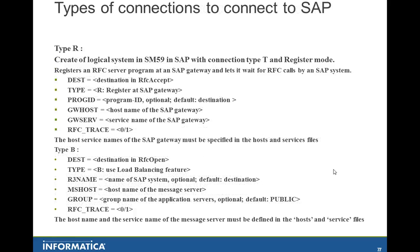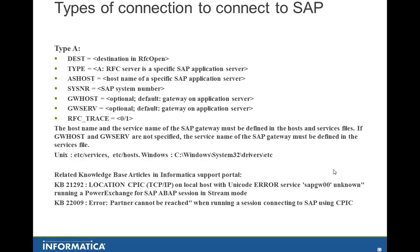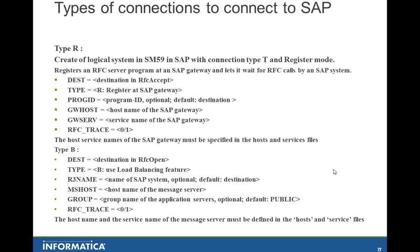Type B requires the host name of the message server, then a group name for all the application servers, and then the name of the SAP system where the message server is configured. For Type A, it is more straightforward — you just specify the host name of the SAP application server and the system number. The GW host and GW SERV are optional for Type A. It connects based on host name followed by port number, where the port is identified from the services file. GW SERV maps to something like sapgw00 or sapgw01, which maps to the port on which the gateway service is listening.